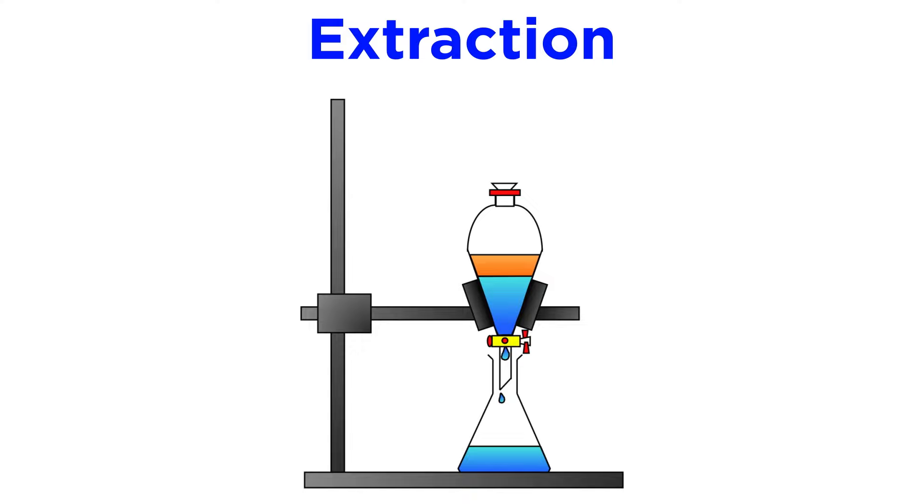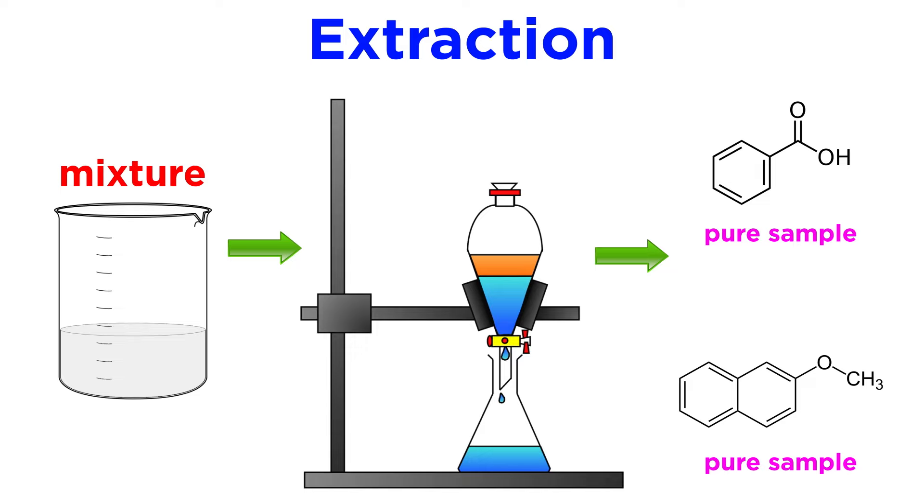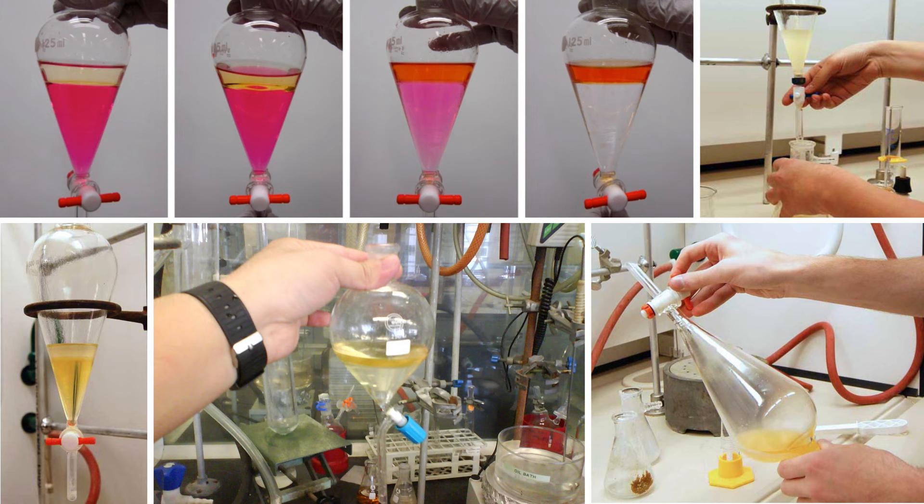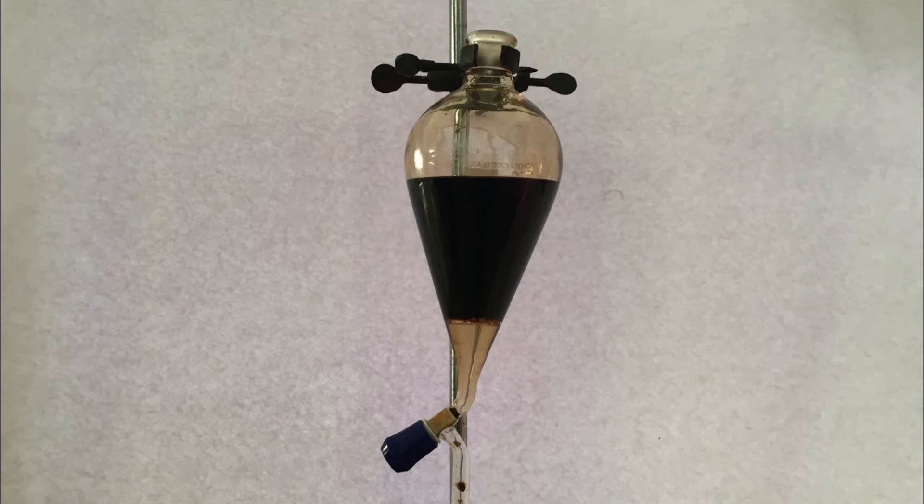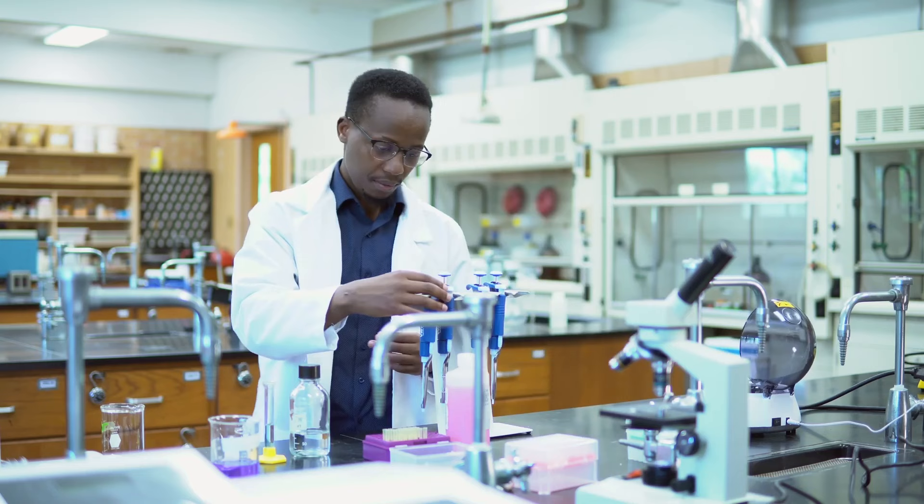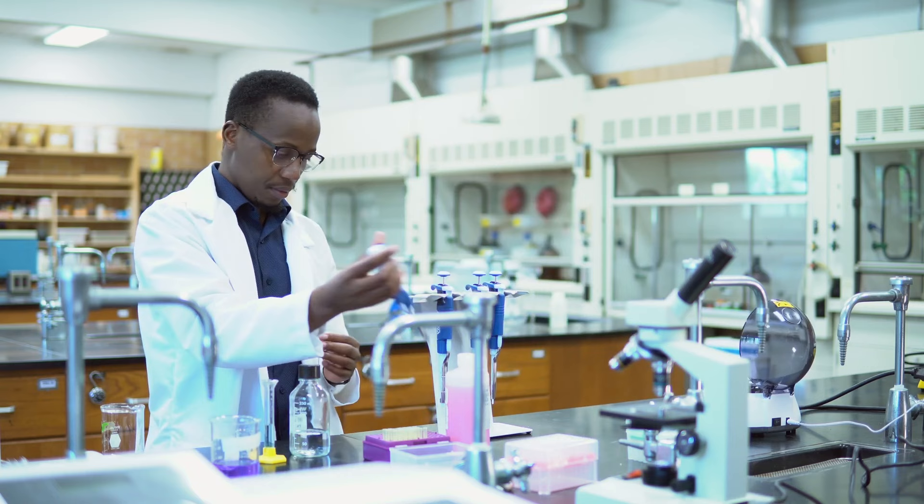And with that, we have completed a liquid-liquid extraction. We had two organic molecules mixed together in an organic solvent, and we separated them based on their chemical properties, namely their propensity to undergo an acid-base reaction. This is an important tool that is used constantly in organic chemistry. It is also widely used in industry for the extraction of natural products, ranging from caffeine extraction from leaves to metal extraction from minerals. With this now understood, let's move forward and check out some other techniques.